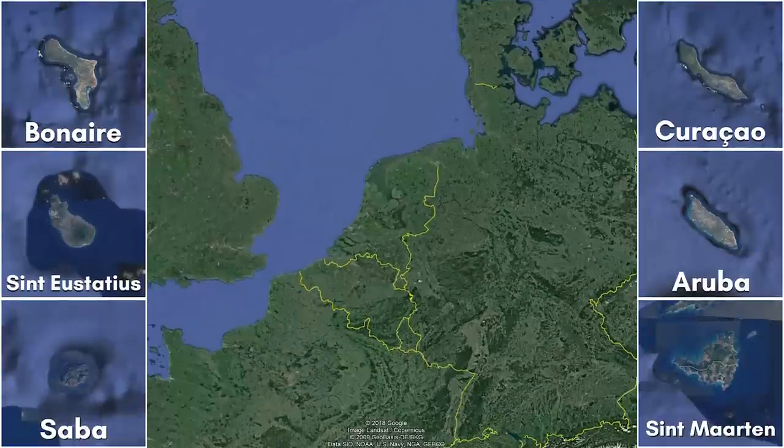So that's the Kingdom of the Netherlands — 17 million people spanning three constituent countries in the Caribbean, as well as one constituent country in Northern Europe with 12 provinces and three special municipalities.